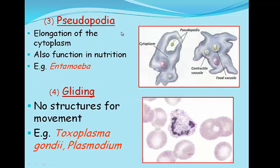Pseudopodia, or false feet, is the third form of locomotion. An example is the amoeboid parasite Entamoeba. Here we can see the finger-like projections accessing food for this parasite. And lastly, gliding — it does not involve any structures for movement. Here we can see a parasite in a white blood cell of an animal. Some examples are Toxoplasma gondii and Plasmodium.